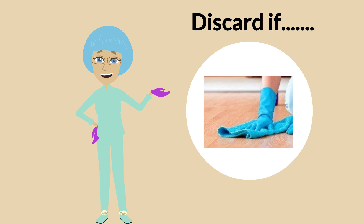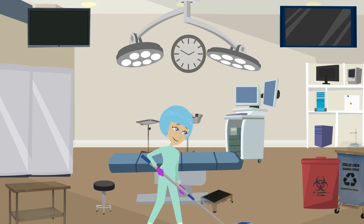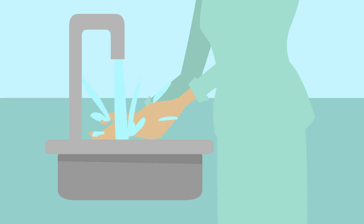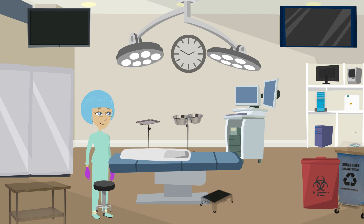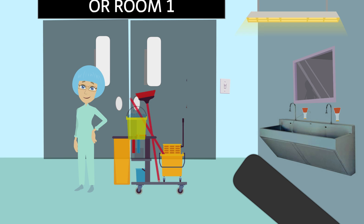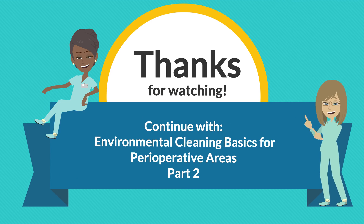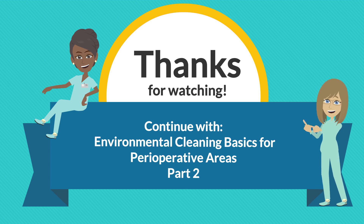Discard the cloth if it touches the floor or is used to clean items such as wheels or casters. Mop the floor with a disinfectant around the procedure table if visibly soiled. Remove gloves and perform hand hygiene. Place new linens on the procedure table and add new trash and linen bags in their respective hampers. Remember to close the OR doors after cleaning. Floors are considered dirty at all times in the perioperative area, so items that touch the floor for any amount of time are contaminated. This completes the between case cleaning information and Part 1 of the basic infection prevention principles in perioperative areas video. Please watch the second video in this series for terminal or end-of-day cleaning and additional information about environmental cleaning in the perioperative area.